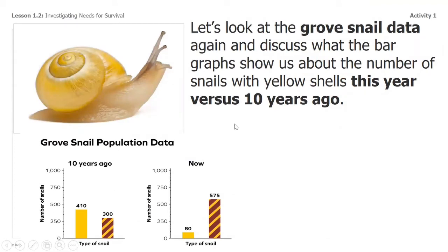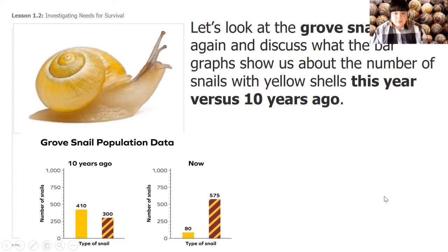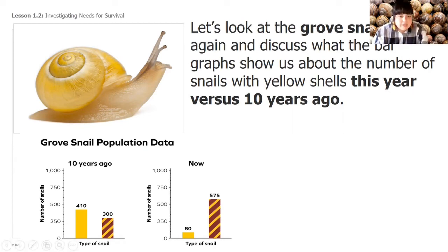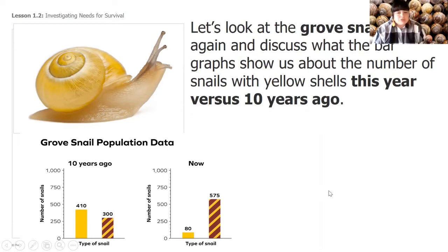When we look back at our snail data and we're talking about the bar graphs, we're looking at what's happening. There's a 10-year difference. Looking at the data, there were 410 grove snails and now there are 80. Ten years ago there were 300 banded snails and now there are 575. So something must be happening and we need to know why. Why are the grove snails not surviving and thriving?